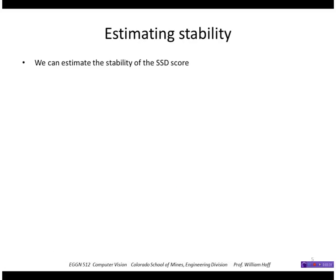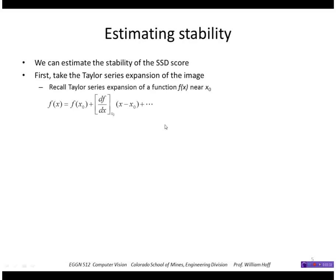We can quantify this by looking at an approximation of that surface. So recall a Taylor series expansion of a function near a point X0. We take the first derivative evaluated at X0, multiply it by the shift from X0, and then there are some higher order terms, higher order derivatives that we can ignore.